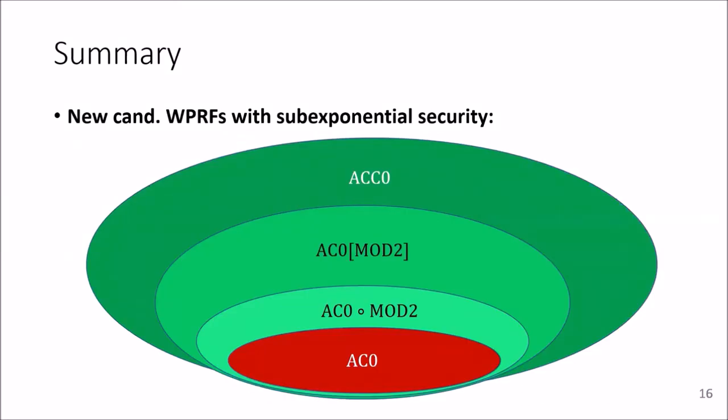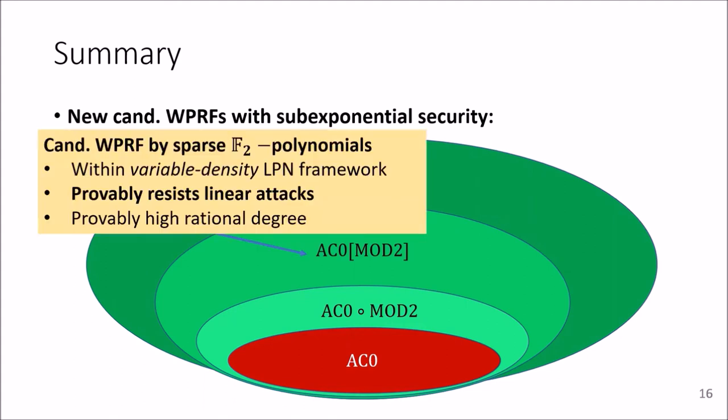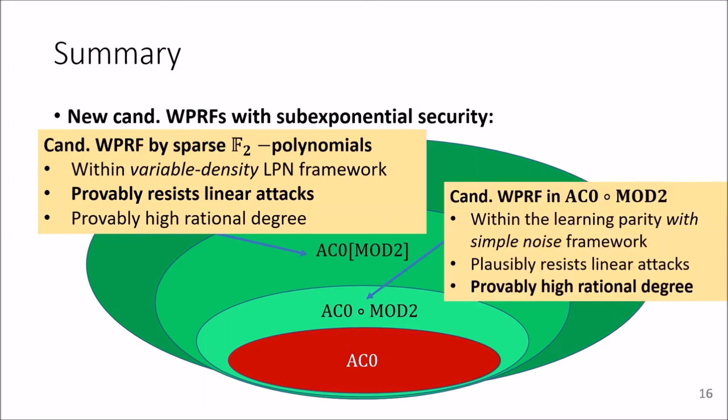To summarize, in this paper we brought forward new candidate weak PRFs with sub-exponential security. Our first candidate weak PRF is computed by sparse F2 polynomials. It fits into the variable density learning parity with noise framework. It provably resists linear attacks and it also has provably high rational degrees, so it's not susceptible to algebraic attacks.